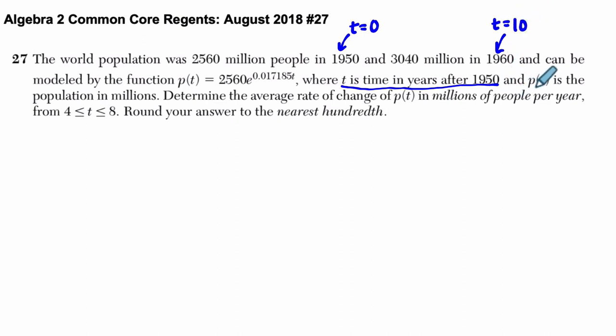And p of t is the population in millions. So that's why they're writing it this way. Determine the average rate of change from t equals 4 through 8, round your answer to the nearest hundredth. So four years after 1950 to eight years after 1950.